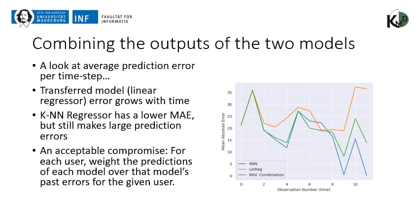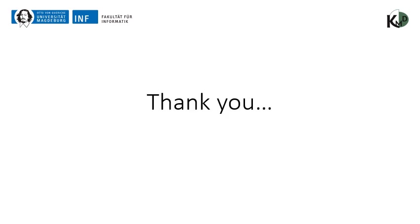Looking at average error over all users from the first to the last prediction, the linear regressor becomes worse and worse over time while the KNN regressor becomes better and better. However, since the KNN regressor sometimes makes very large errors, we form a weighted combination of both methods: if a particular method predicts well for a particular user, it receives a higher weight. We computed a weighted average based on that. That concludes our presentation — thank you for your attention and we look forward to your questions.